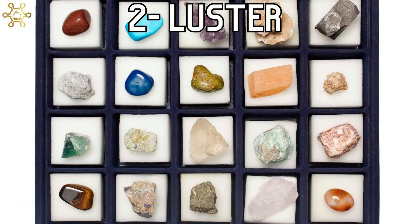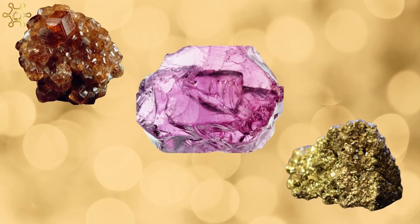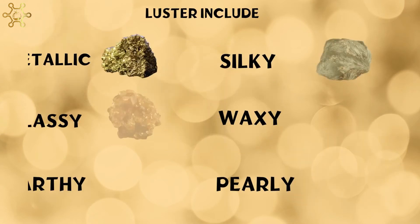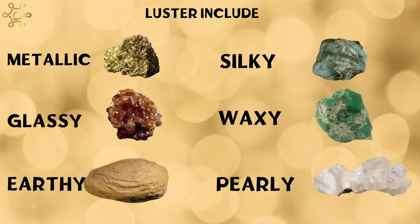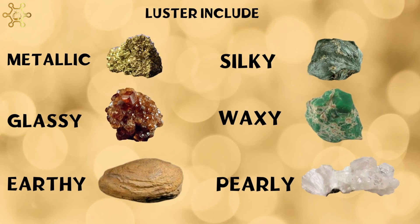Number 2: Luster. Luster is the term that describes how light reflects from a mineral's surface. Terms used to describe luster include metallic, glassy, earthy, silky, waxy, and pearly.